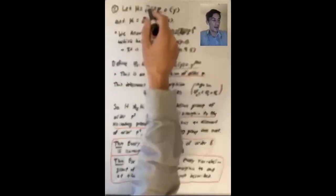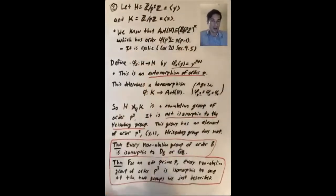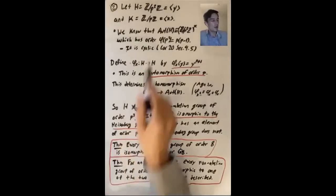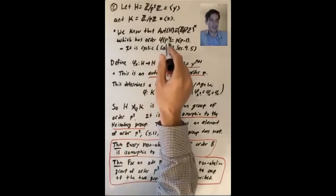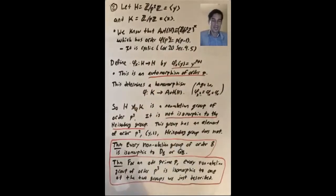So we know that the automorphism group of H, the automorphism group of Z mod p squared Z, is isomorphic to Z mod p squared Z star, the set of invertible elements mod p squared under multiplication. And we know the order of this is the Euler phi function of p squared, which is p squared minus p or p times p minus one.